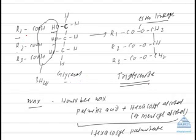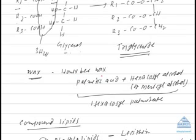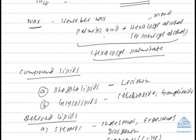If one fatty acid is esterified with glycerol, the compound is called a monoglyceride; two fatty acids form a diglyceride. Wax is another group of simple lipids containing an alcohol other than glycerol. The most important example is honeybee wax, which consists of palmitic acid and hexacosyl alcohol (also called myricyl alcohol), a monohydric alcohol. Its chemical name is hexacosyl palmitate.